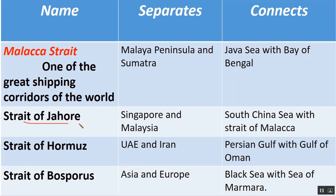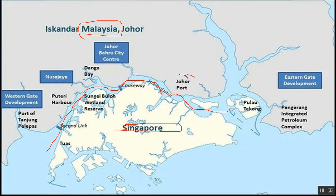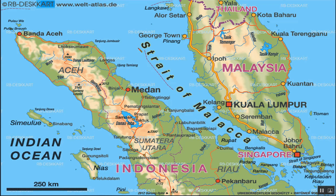The next is the Strait of Johor, which separates Singapore from Malaysia and connects the South China Sea with the Strait of Malacca. It is one of the longest straits. Johor is situated in Malaysia. Here on the map, this strait connects the Strait of Malacca with the South China Sea.